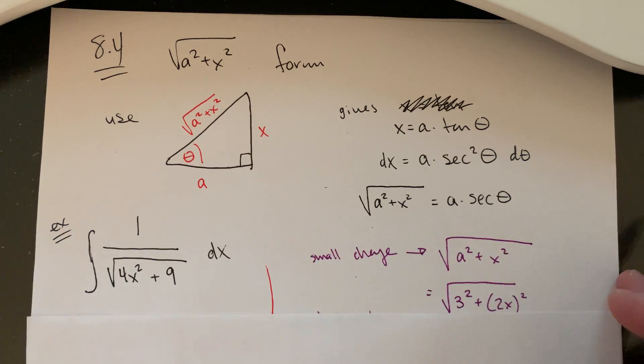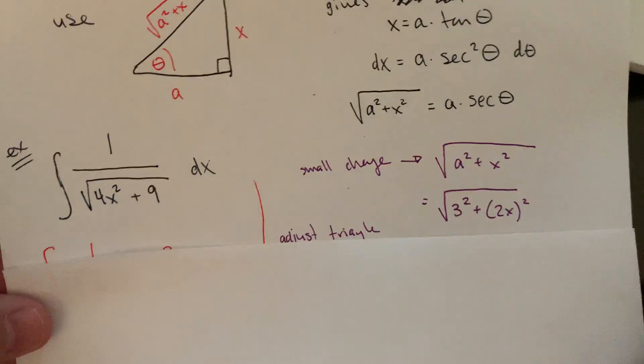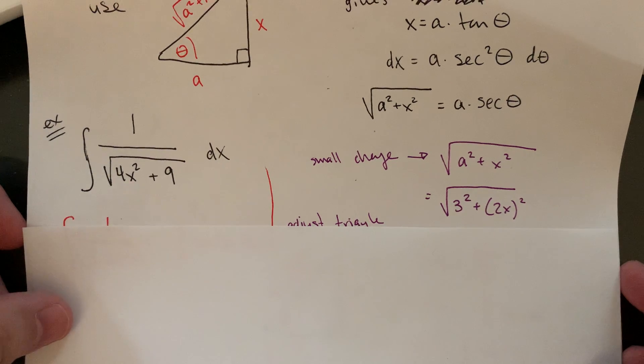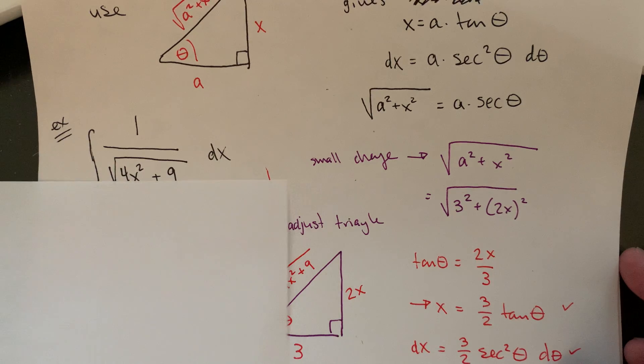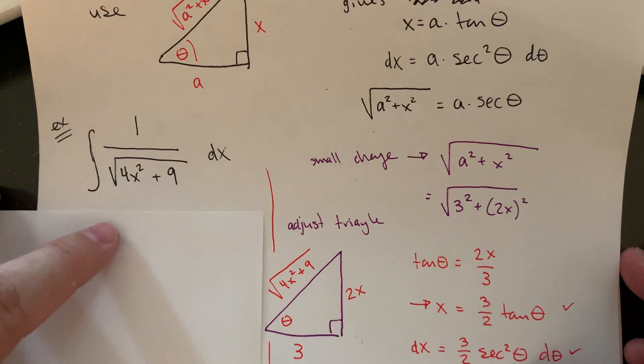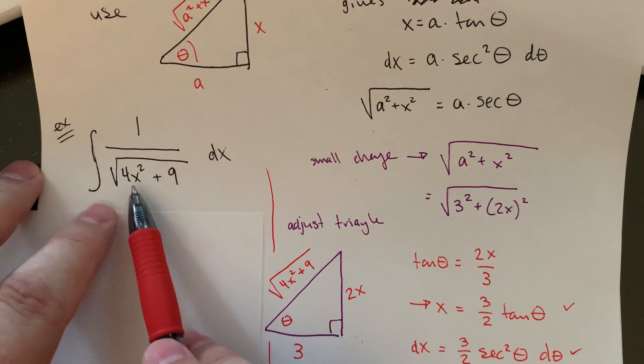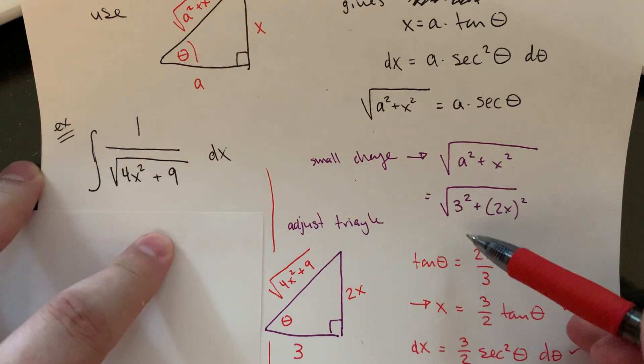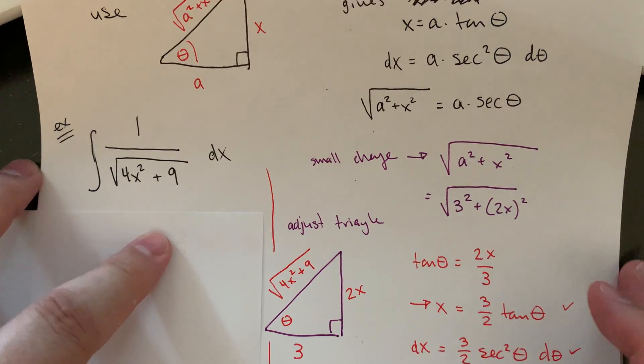What that allows us to do is then approach a particular problem. So what I did here is let's do the integral of 1 over the root of 4x squared plus 9. Now, there's a small change in this example. And so that change is, the change here is it's not just an x squared. It's 4 times x squared plus 9. So the a value here is 3. a is 3. And then the x, instead of just being x, the x is 2x. This is not a big deal.